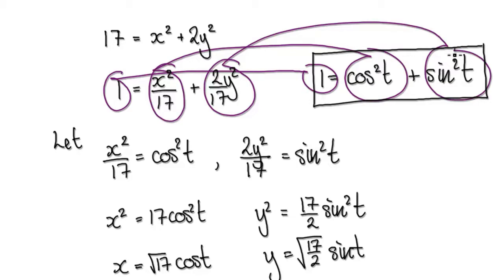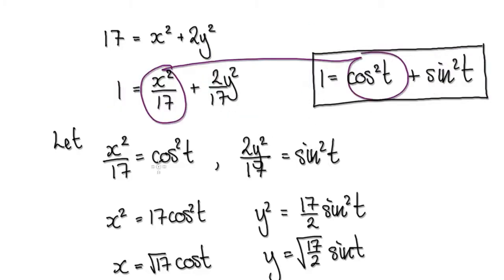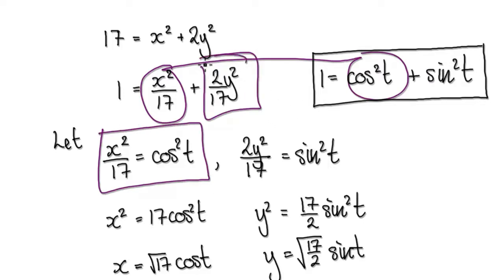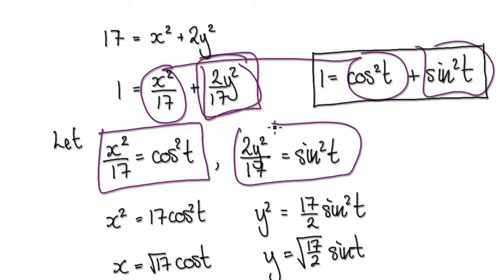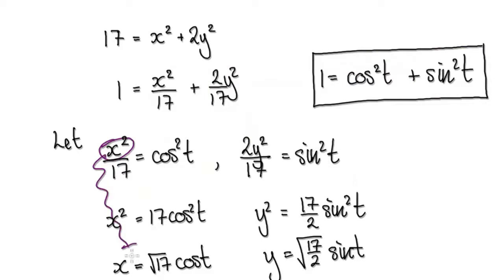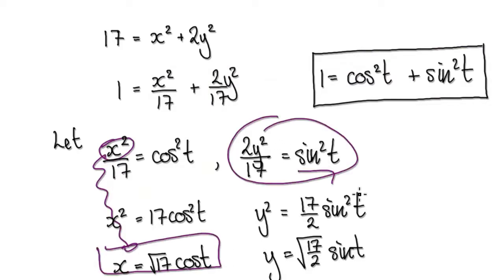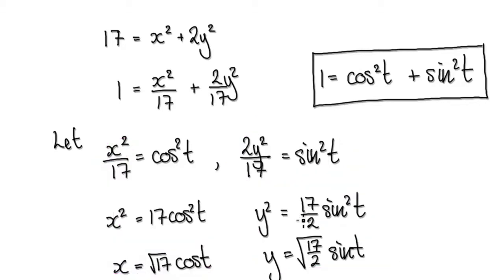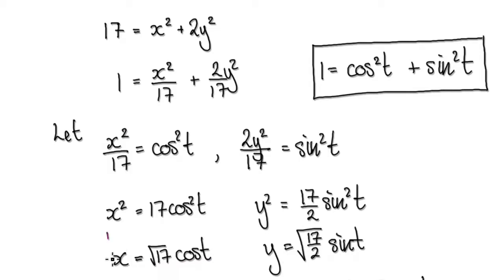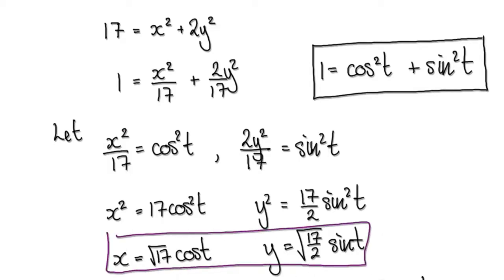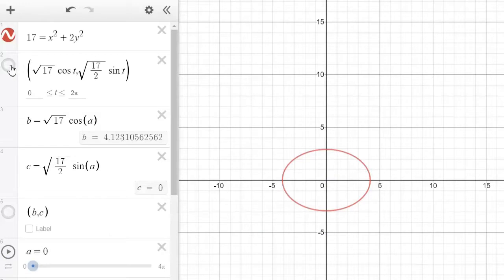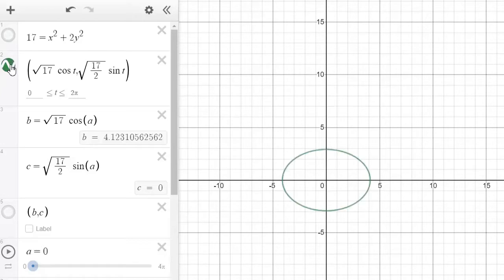This is just a technique to convert it into parametric form. We set this equal to cosine and this equal to sine, which gives us x and y expressions. Going back to Desmos, punching that in gives us the ellipse — our old Cartesian ellipse is now in parametric form.